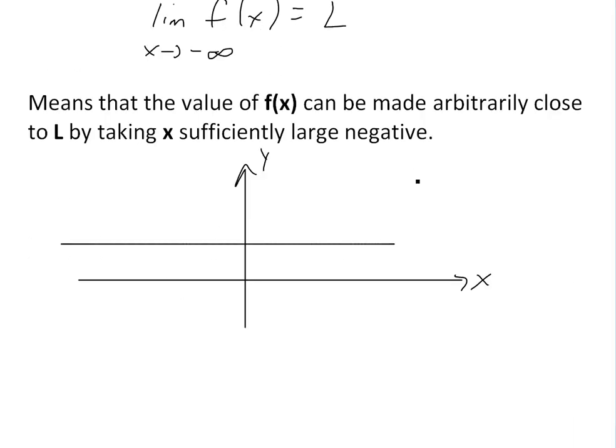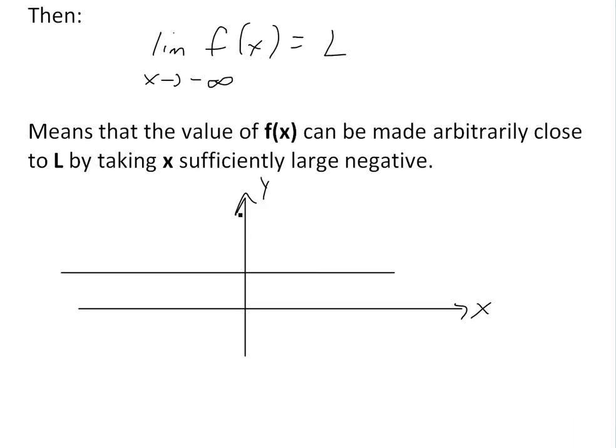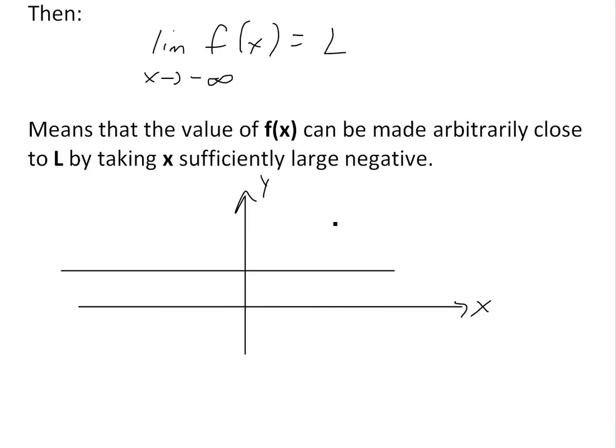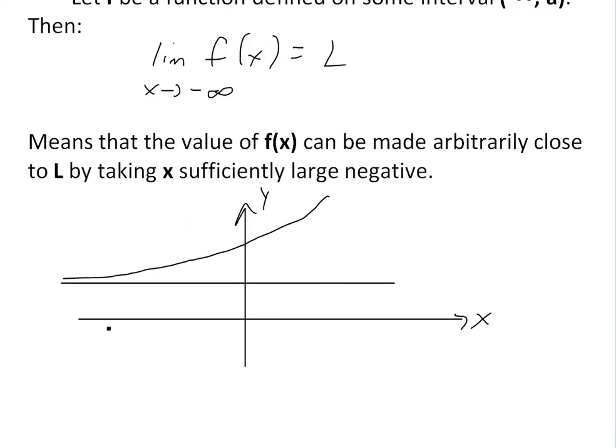If we were to graph this one, an example of one where it's going to the negative side instead of going to the right, we could do something like this. So this just illustrates how it's going to negative infinity. You can still have a horizontal asymptote. This is y equals L right here, and this is f(x).